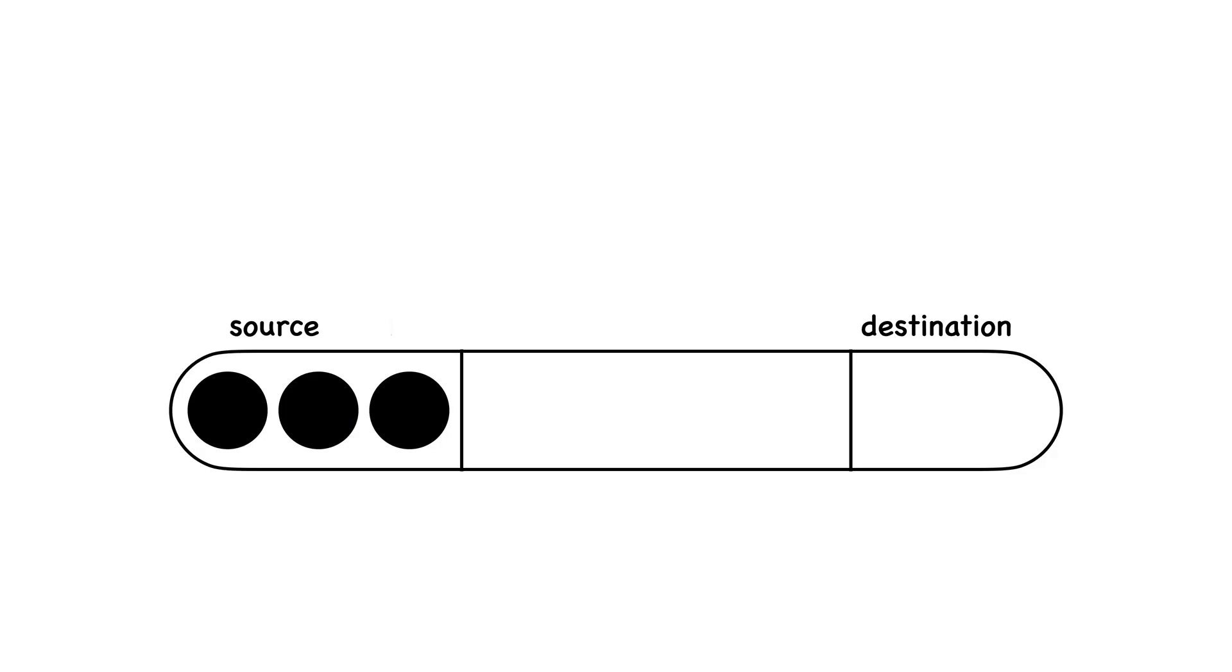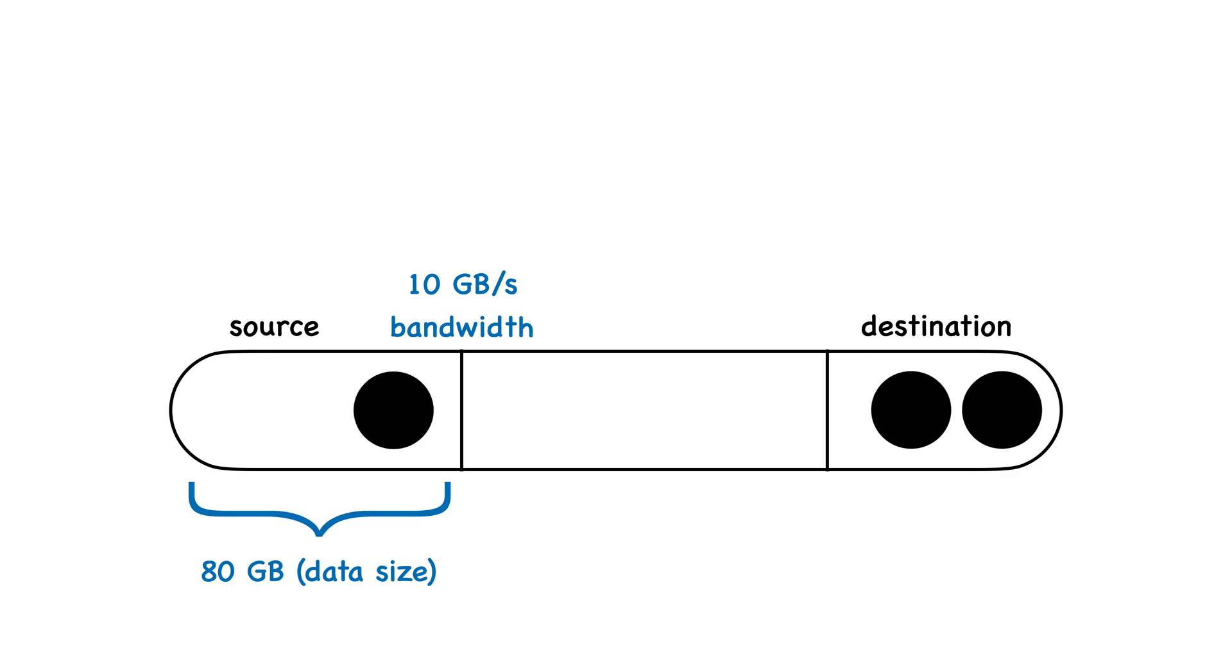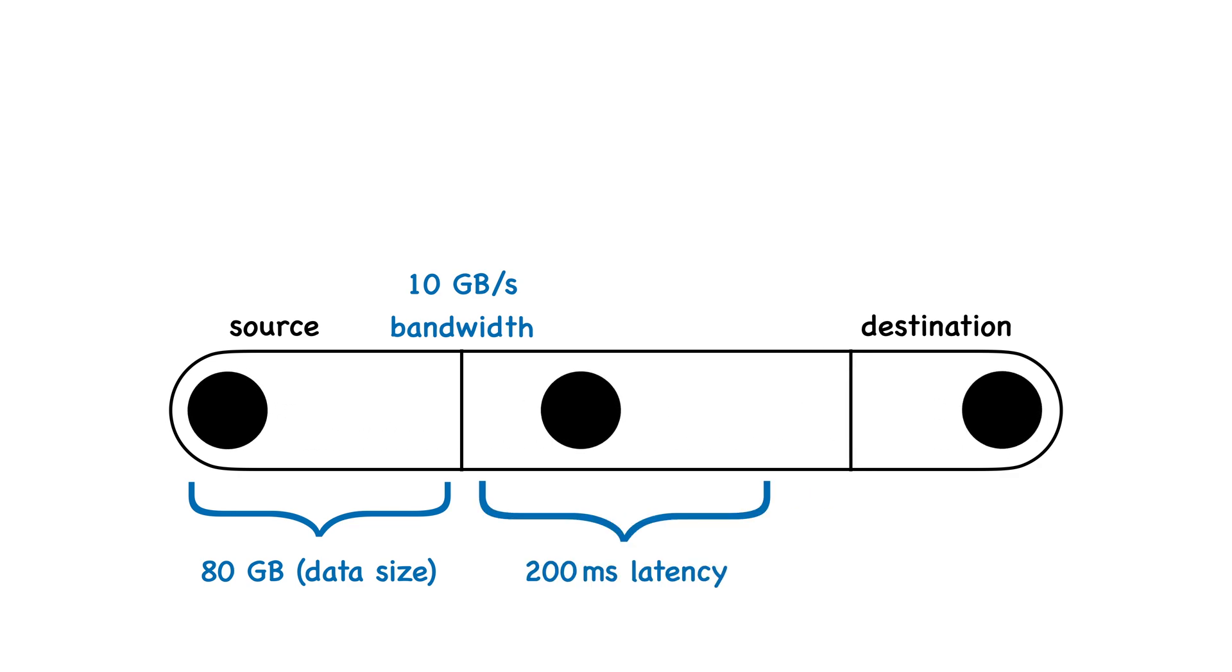Let's move this to a real-world networking example. Let's say you want to send 80 gigabytes on a 10 gigabyte per second bandwidth network, and your latency is 200 milliseconds. How long will it take for all of your data to reach the destination?